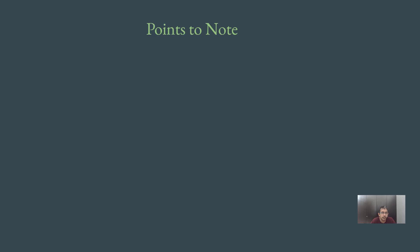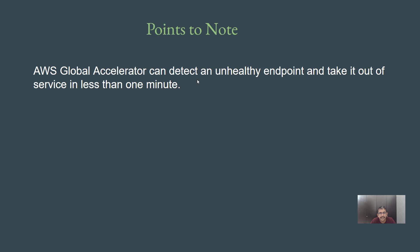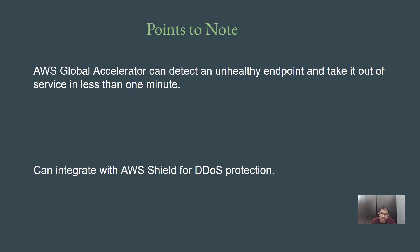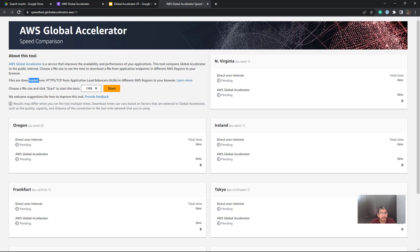A few important points to keep in mind: AWS Global Accelerator can detect an unhealthy endpoint and take it out of service in less than one minute. Global Accelerator can also integrate with AWS Shield for Distributed Denial of Service (DDoS) protection. AWS also provides a specific speed comparison tool which allows us to verify the overall network performance between the internet and when Global Accelerator is used.